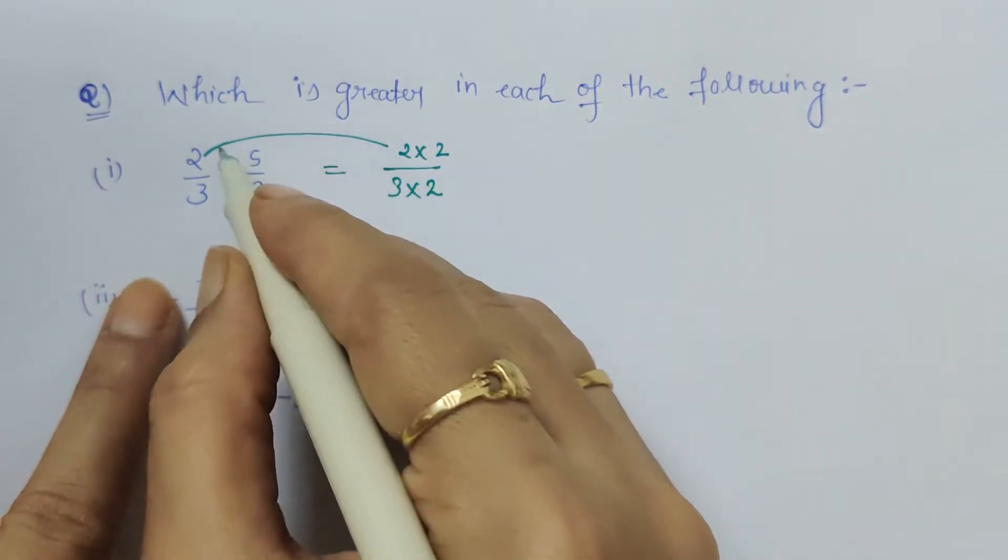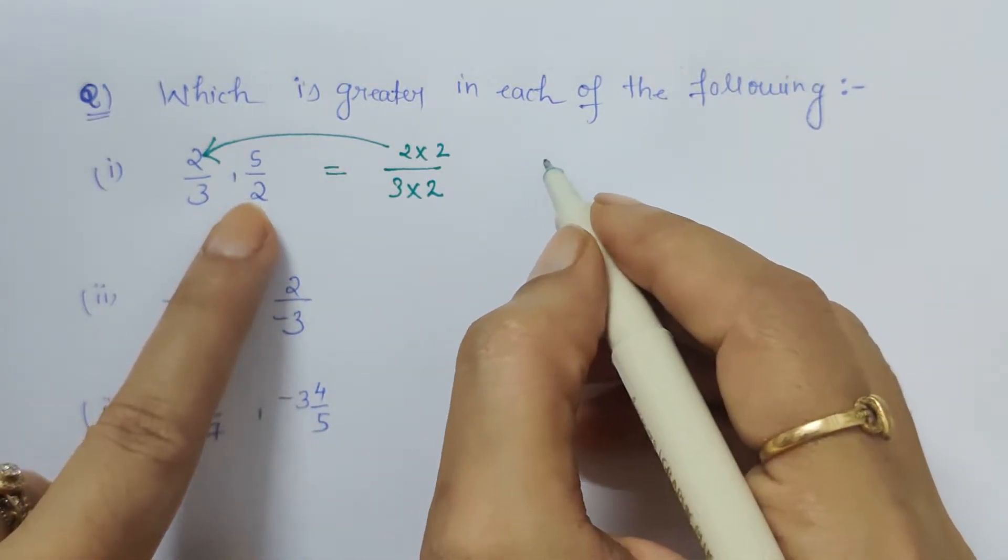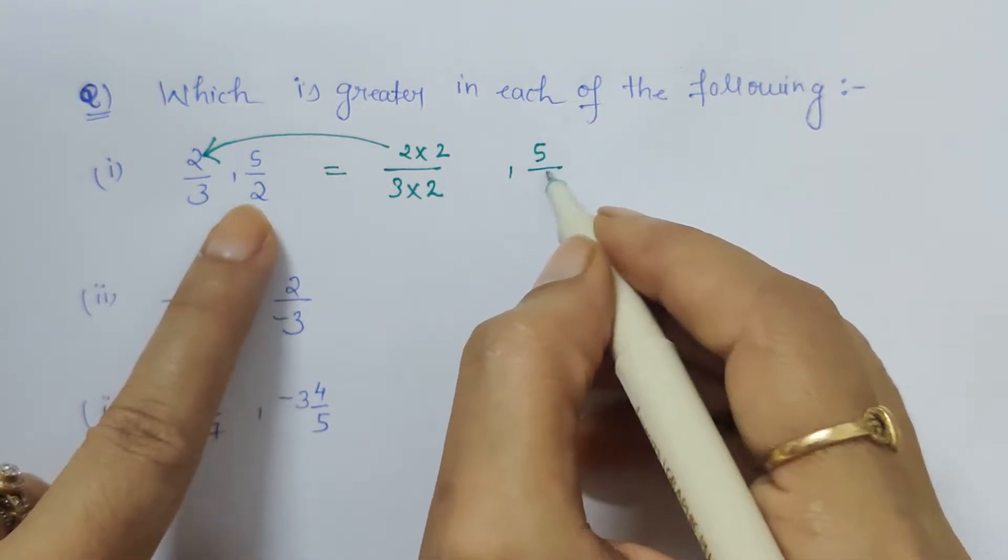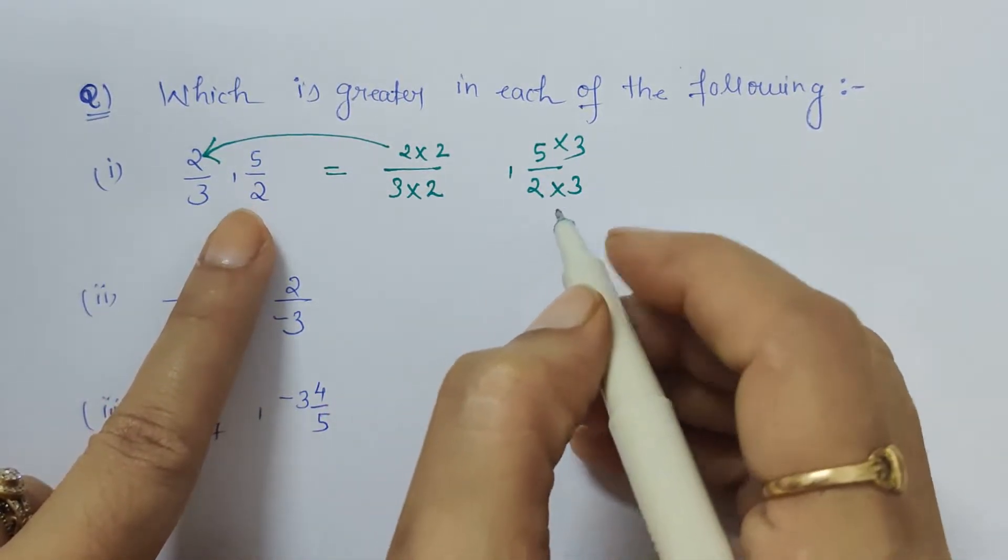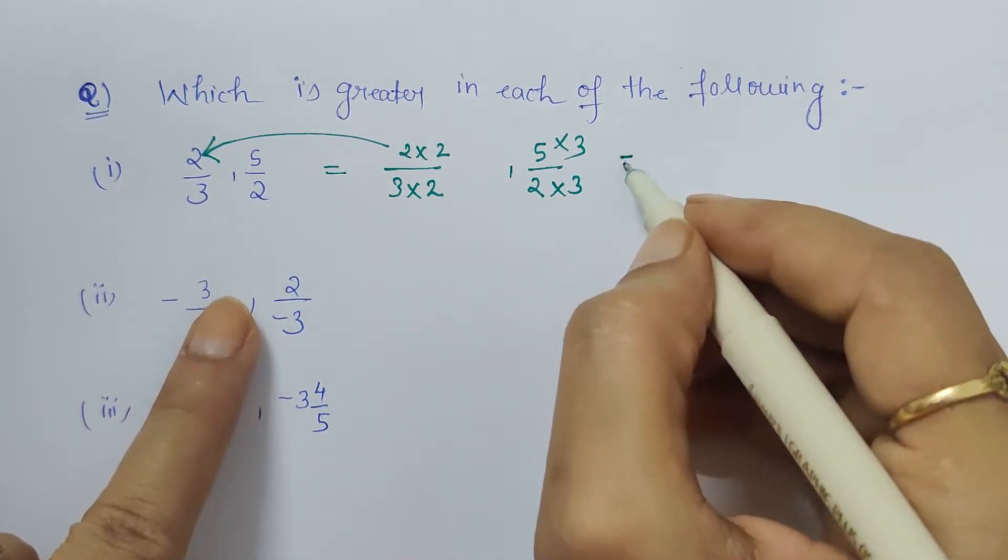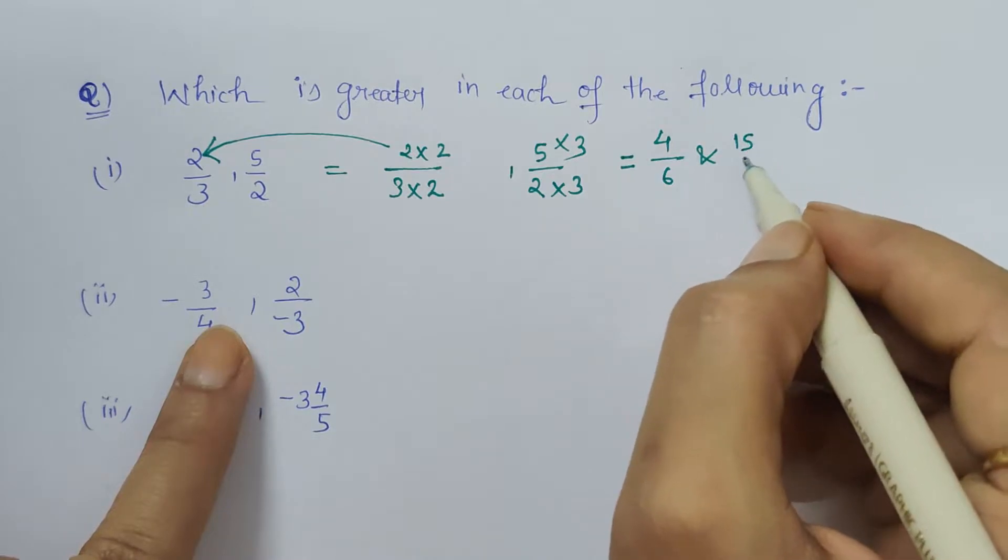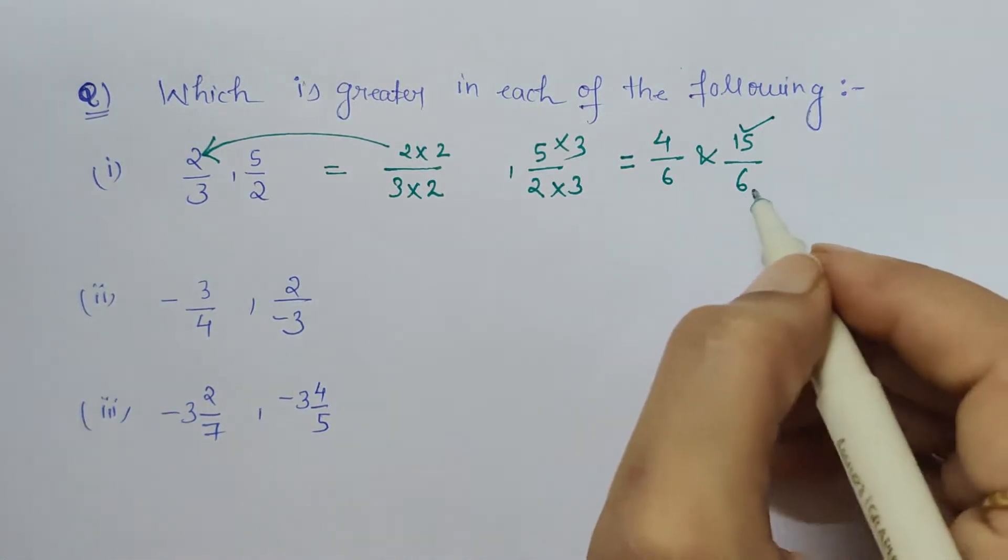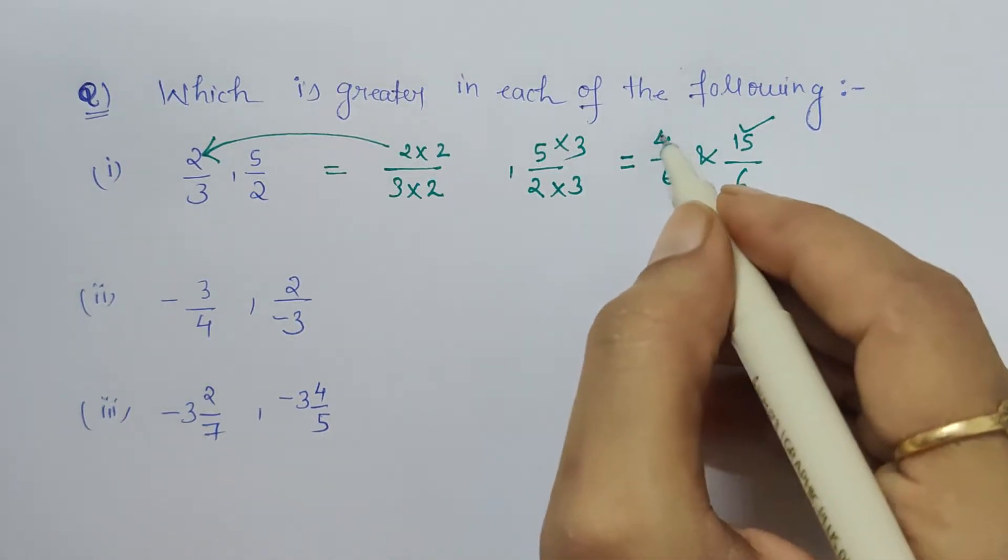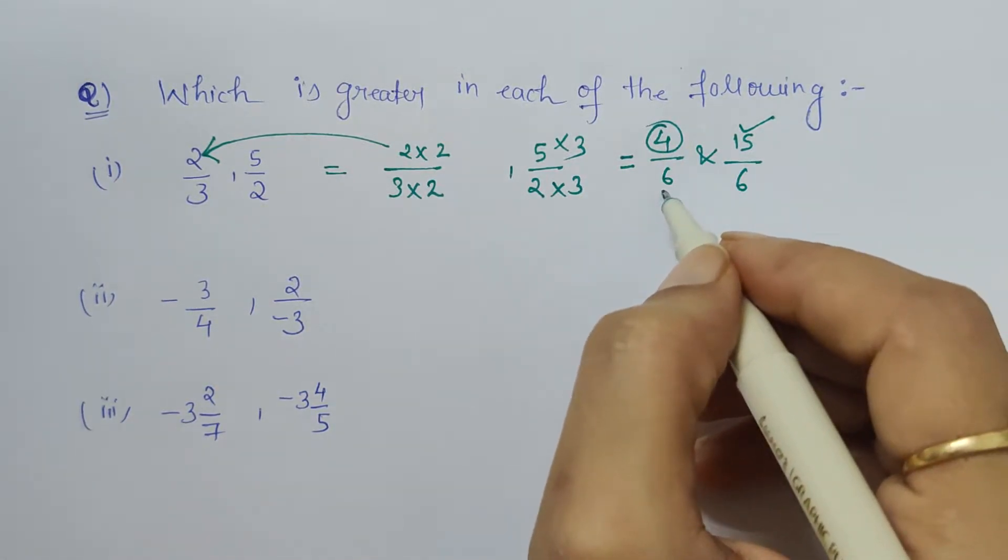For this fraction, and similarly for the other fraction as well, for making it 6 we have to multiply it by 3, and the numerator also by 3. So the result would be 4 upon 6 and 15 upon 6. Now the fraction having greater numerator is greater and the fraction with the smaller numerator is smaller when we have made the denominators same.